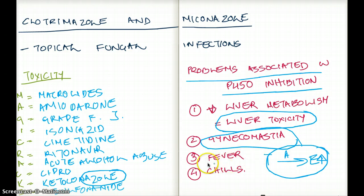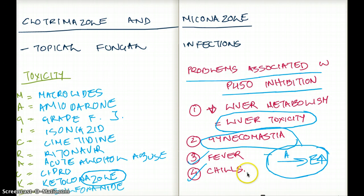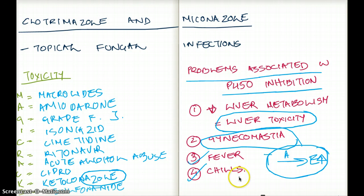Other associated symptoms of azole toxicity include fever and chills. And what is one specific toxicity of fluconazole? It's going to cause torsades de pointes. That is my interpretation of the azoles.